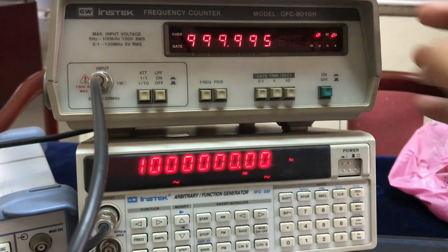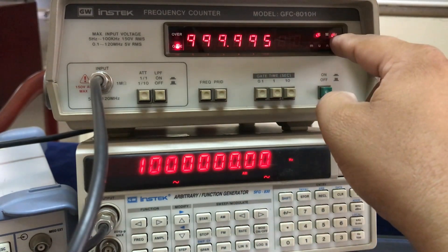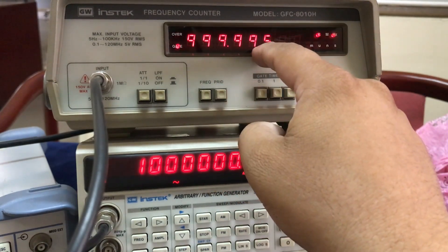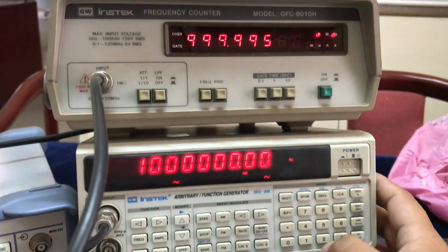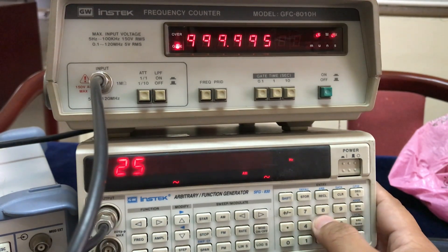One megahertz. As you can see this was updated after one second. This is 999.995 kilohertz, which means almost one mega. The mega is not highlighted. Let's try like about 25 mega or something like that.